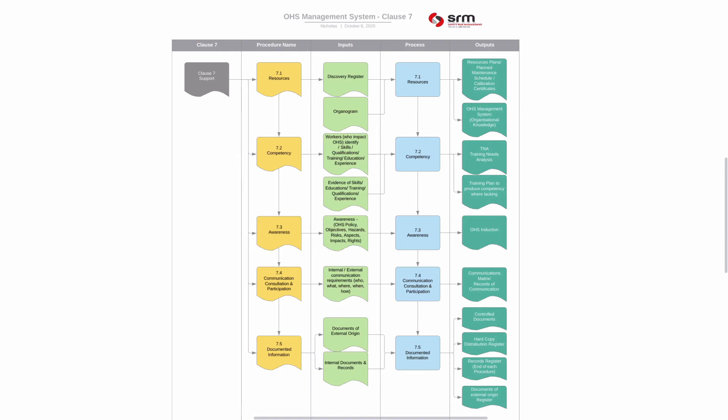I could have a separate process for awareness, though many organizations amalgamate Clauses 7.2 and 7.3 into one procedure for competency and awareness. OSH awareness topics can be incorporated into an induction — making people aware of the policy, objectives, and the positive and negative impacts of conforming or not conforming to the management system. Flash reports, incident investigations, risk registers, SOPs, and work instructions are also good ways to raise awareness.